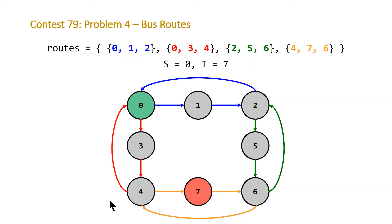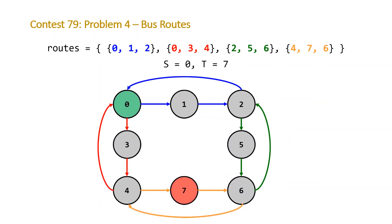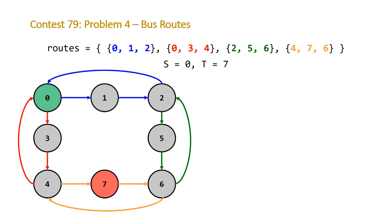The way we're going to solve this is we're going to use a breadth-first search that looks at each stop and looks at each route that that stop can go to. Then we're going to loop through all the stops in each of those routes, keep track of the stops we've visited, and increment the number of buses that we've been on during this process.